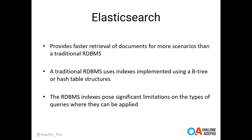One may think: why shall we use Elasticsearch for searches instead of directly interacting with a relational database that the application may already use? The reason is that in a number of scenarios, Elasticsearch provides faster retrieval of documents than a traditional relational database. A traditional relational database uses indexes implemented using data structures like a B-tree or a hash table. However, Elasticsearch and the inverted index provide better capabilities for more types of search queries, whereas relational database indexes pose limitations based on the types of queries they can be applied on.